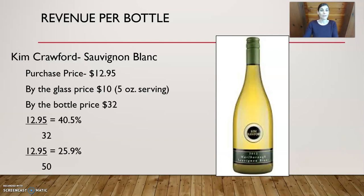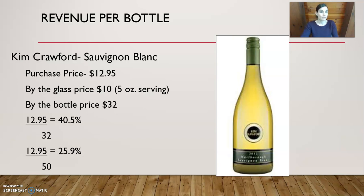As a manager, you have to decide whether to sell wine by the bottle or by the glass. Selling by the glass gives a lower cost percentage of 25.9%, which is better. However, there's a reason to sell by the bottle: once you open a bottle, there's no guarantee you'll sell every glass — it might go bad. If you only sell one glass at $10, you've actually lost money. That's the key difference between selling by the bottle versus by the glass.